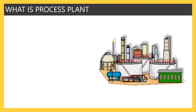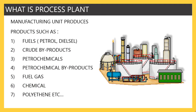Process plants are known as manufacturing units. They produce products such as fuels, crude by-products, petrochemical products, fuel gas, chemicals, and polyethylene — there are more than hundreds to two hundreds of products. Basically, it is a production unit, a manufacturing unit that produces a product.